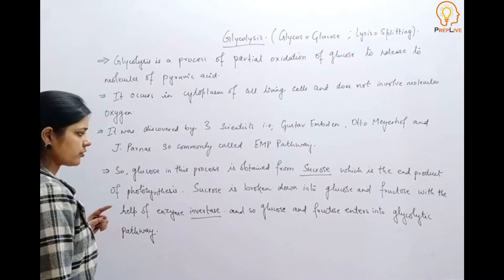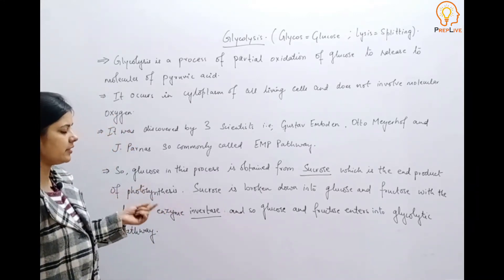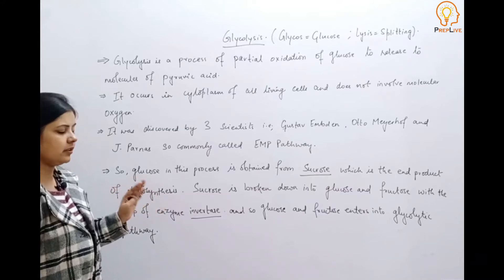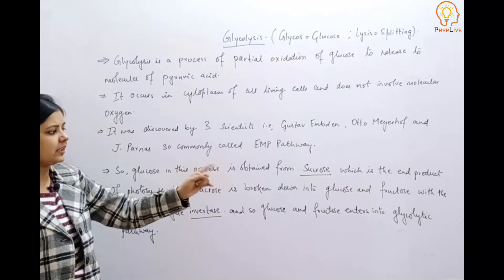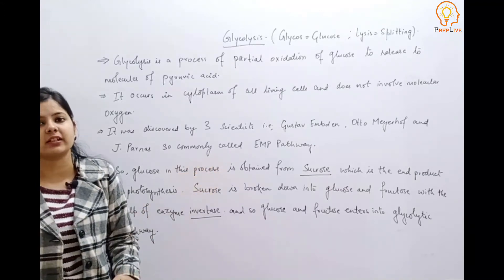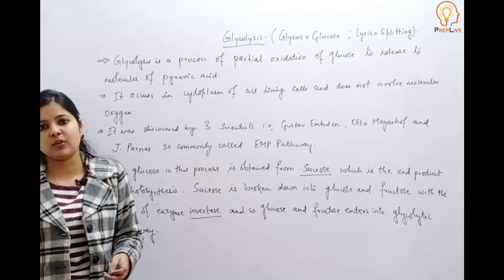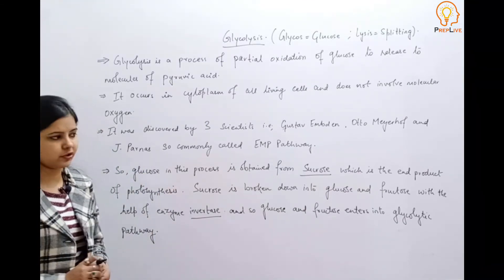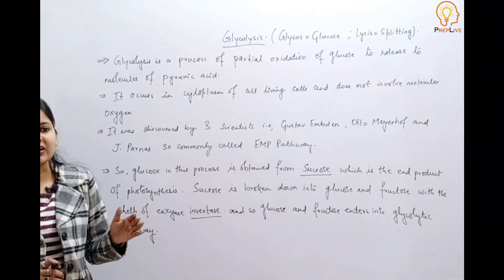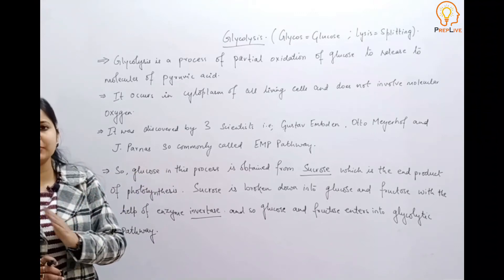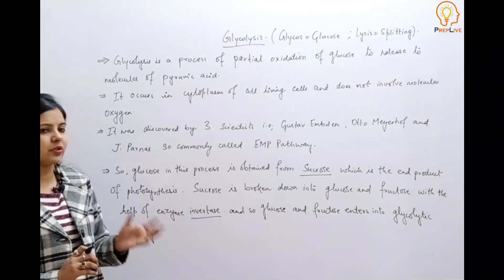So ultimately, sucrose — which is the end product of photosynthesis — is broken down with the help of enzyme invertase into glucose and fructose, and these glucose and fructose are ultimately entered into the glycolytic pathway. Glycolysis is a pathway which is actually completed through multiple enzyme-mediated steps.